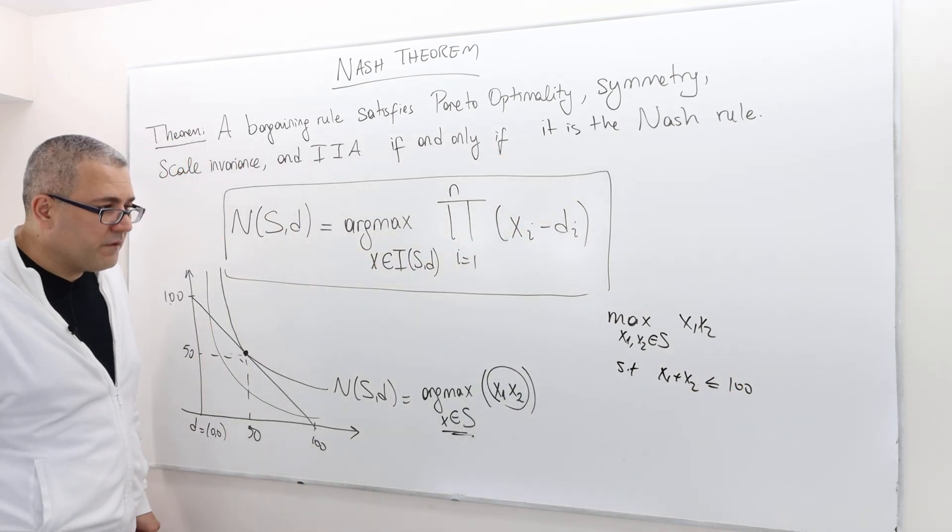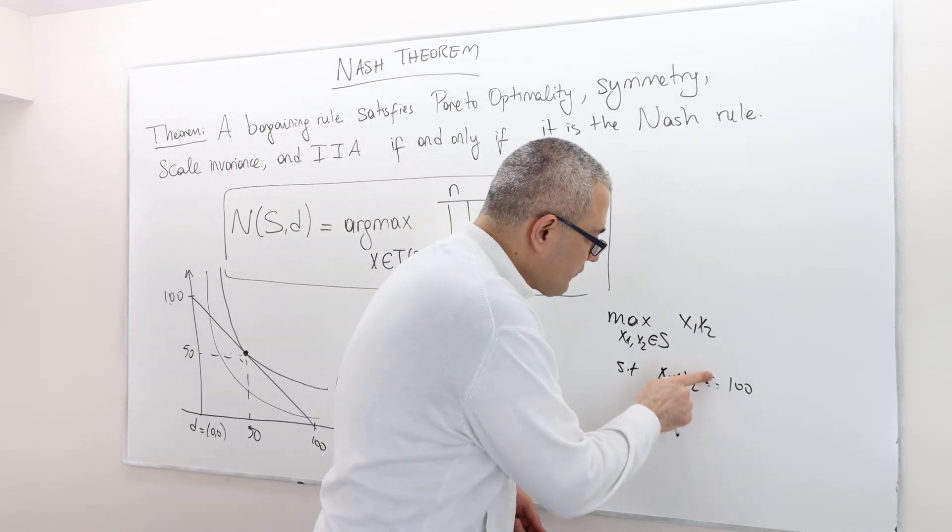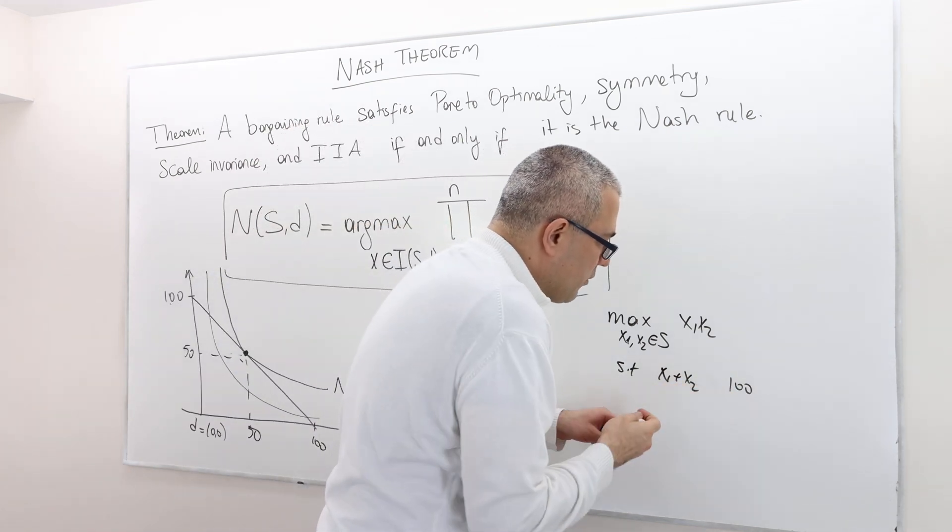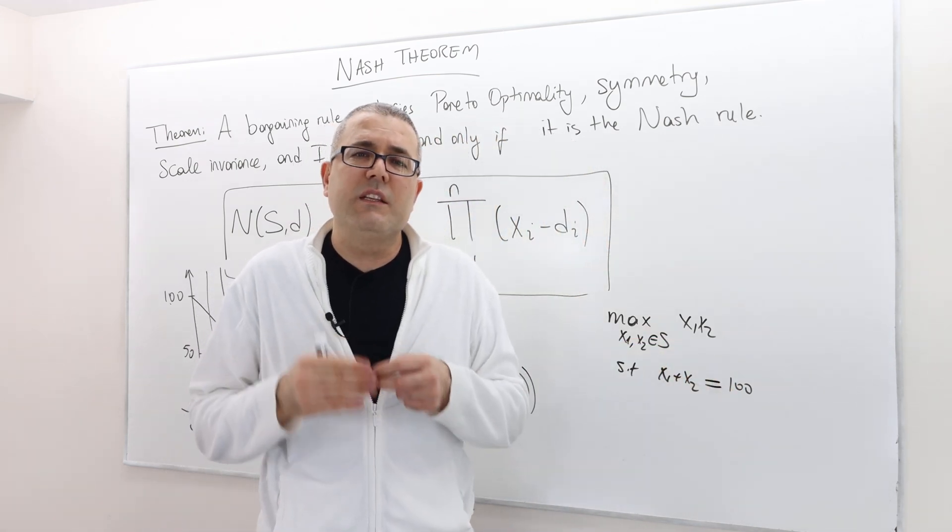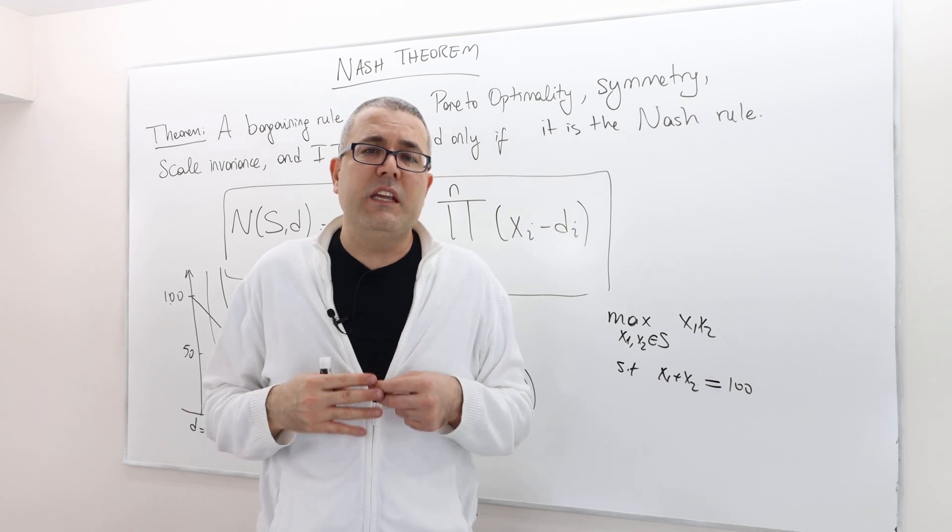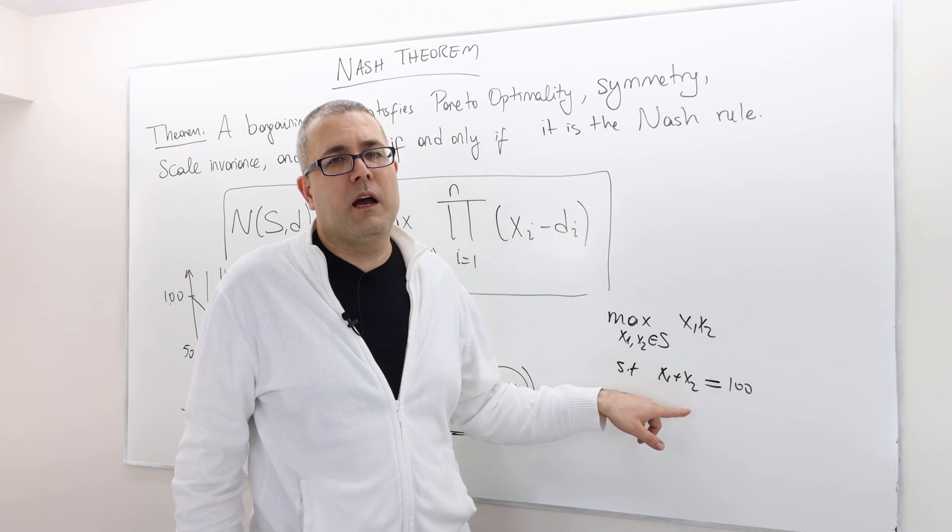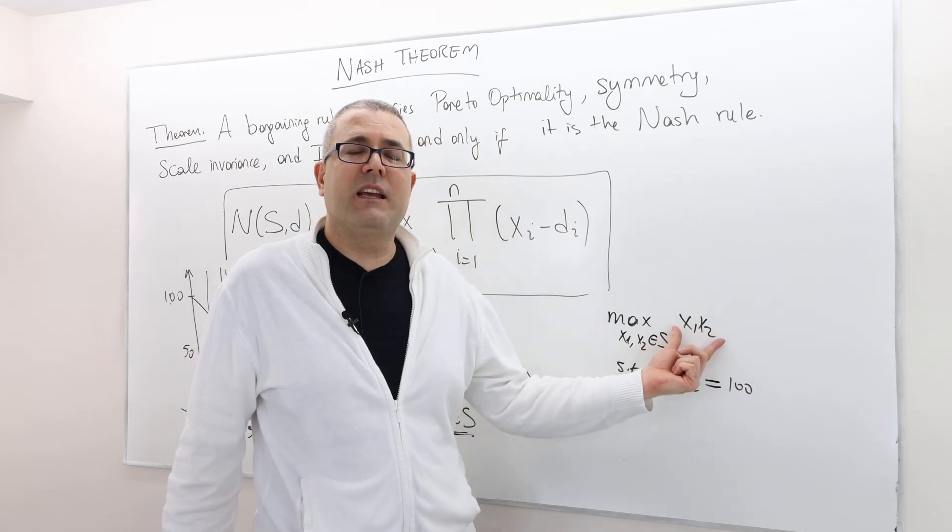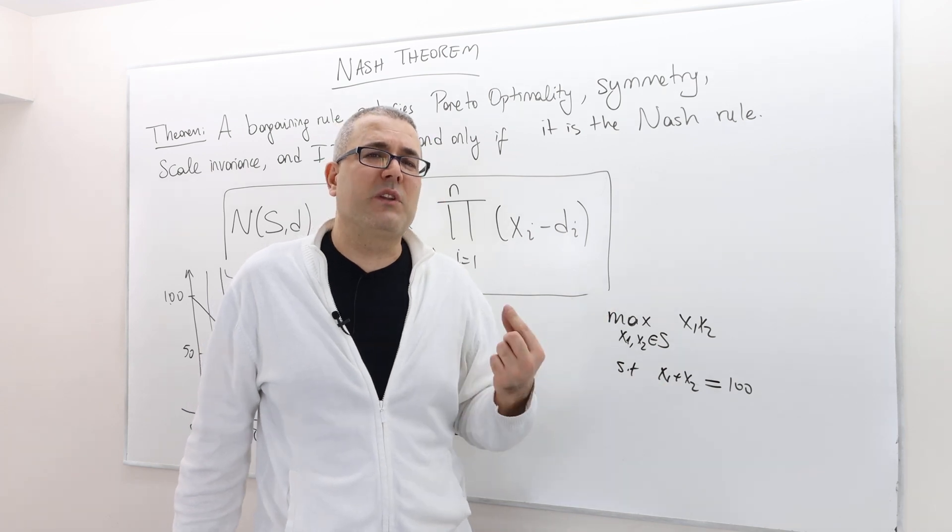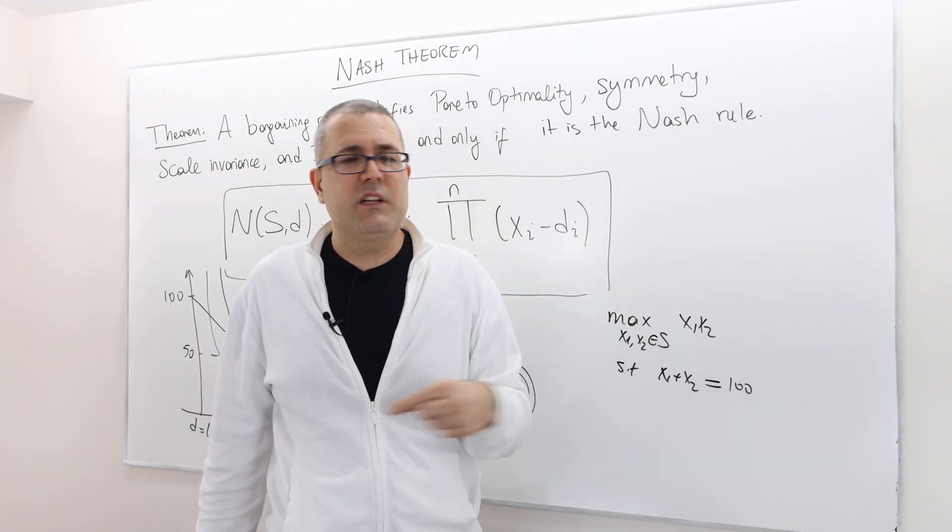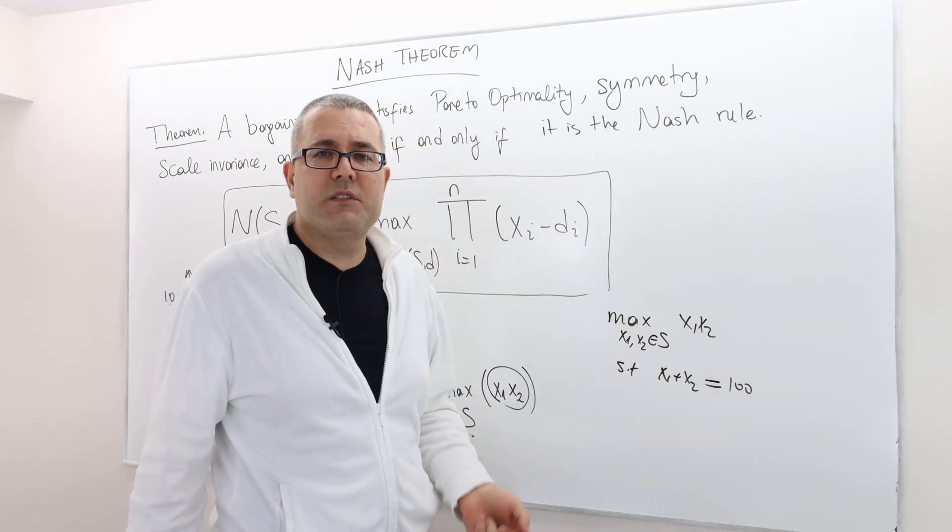And, in fact, you don't have to use less than or equal to, you can use equal to. Why is that so? Well, because X1 times X2, this is an increasing function. It increases both X1 and X2. So, therefore, the maximizing X1, X2 point will never be satisfying X1 plus X2 strictly less than 100. It will always be equal to 100.